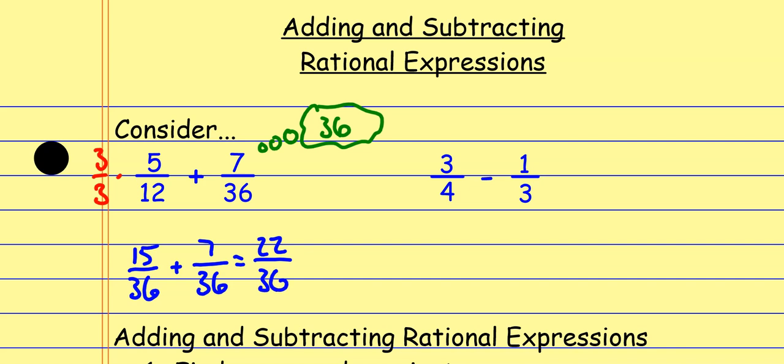The denominator stays the same as 36. The reason that we need common denominators is because we're counting pieces out of the same amount. If I have 15 out of 36 pieces, and then I have 7 more pieces out of the 36, I have a total of 22 pieces out of the 36. That denominator — what it's out of — has to stay the same. And then I would reduce this fraction because I can, so it's 11 over 18, and that's it.